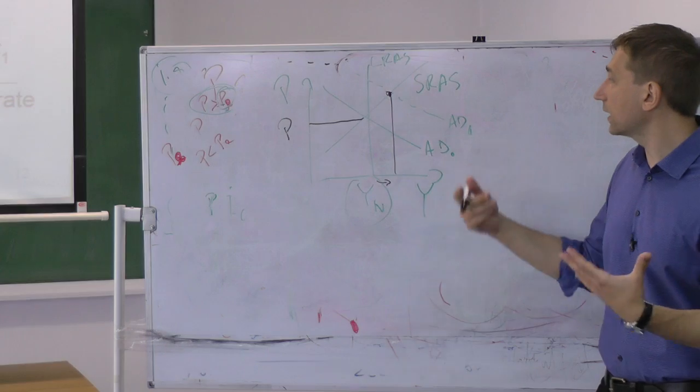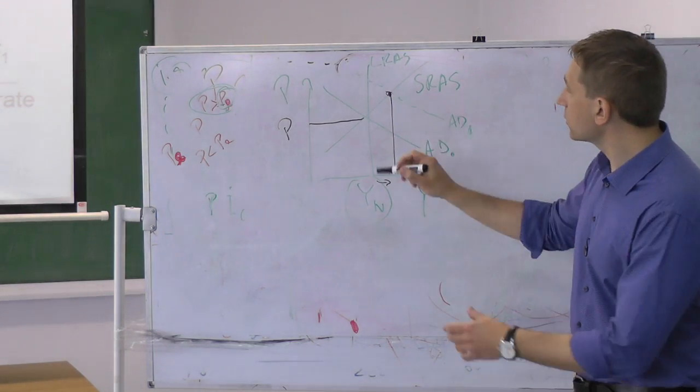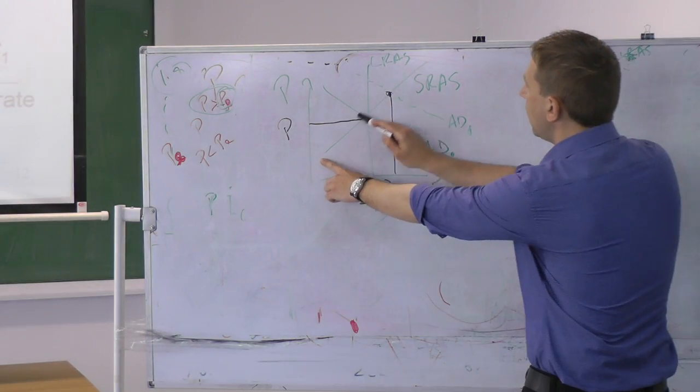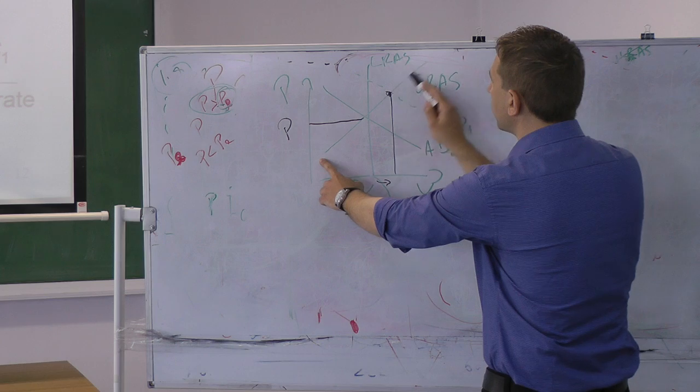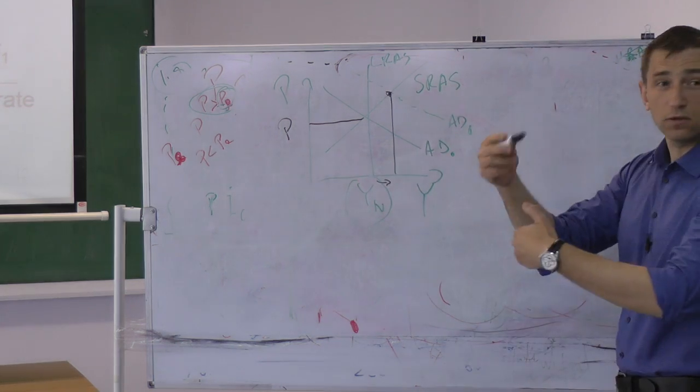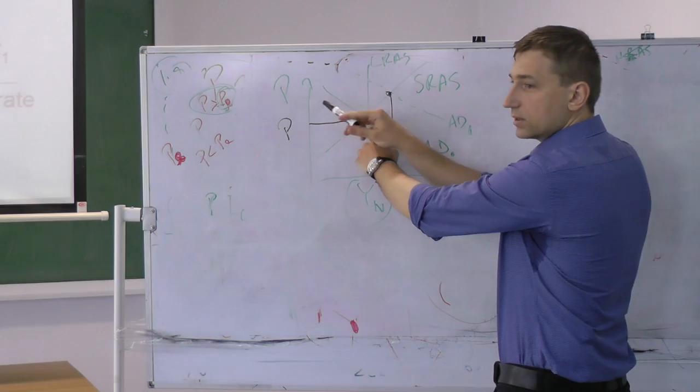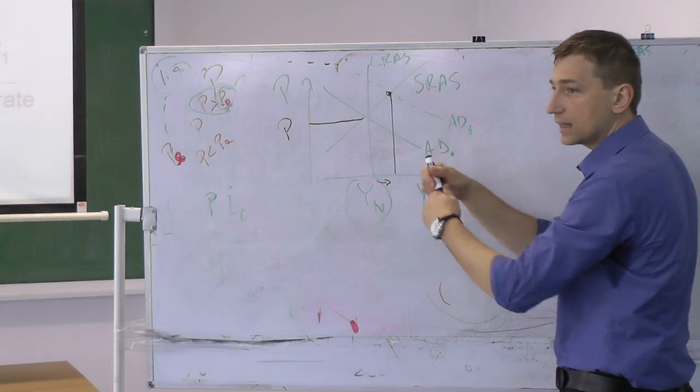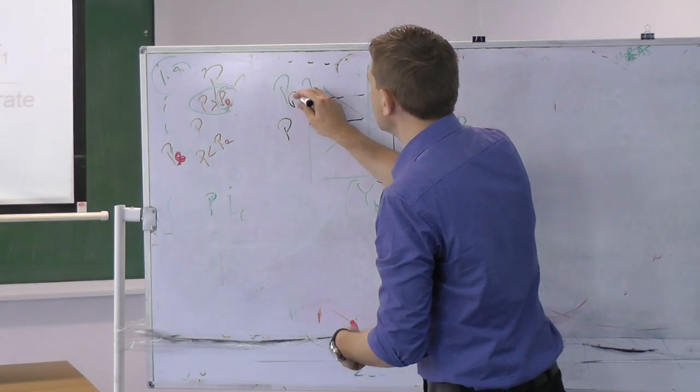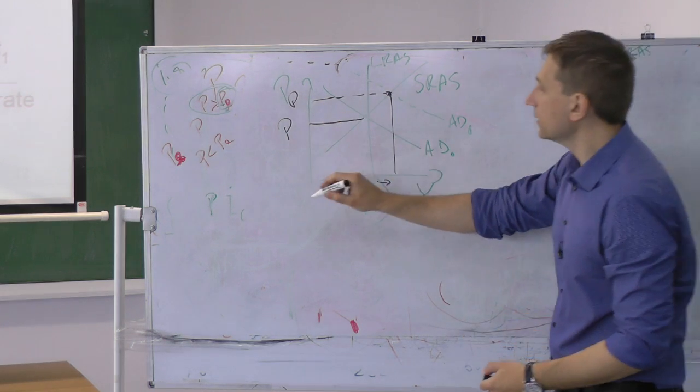They increased the money supply and the economy was positively affected by it. They got like a big stimulus. They are now working much nicer because we moved along the short run aggregate supply. For example, because of the sticky wage theory, wages were negotiated based on this level, but the companies are now able to sell at this price level.